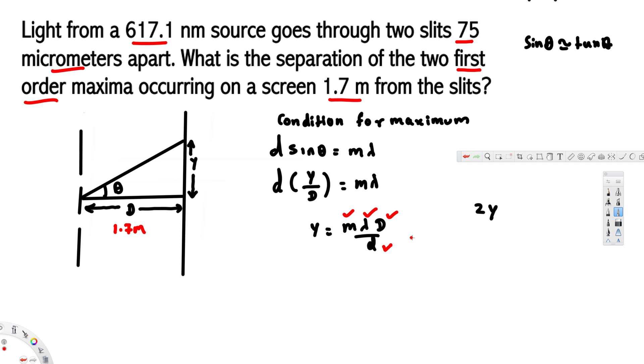We have everything, so we can directly plug it in and find the answer. So m is 1, and the given wavelength is 617.1 × 10⁻⁹, and the separation from the screen to the slits is 1.7.